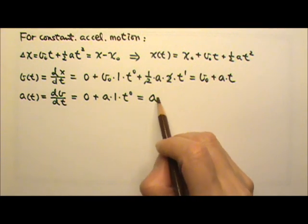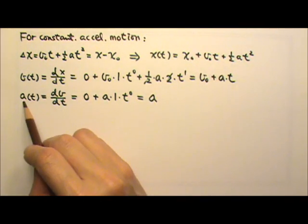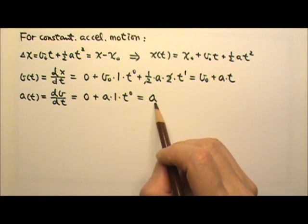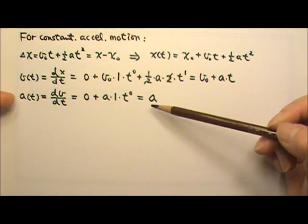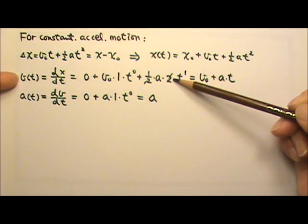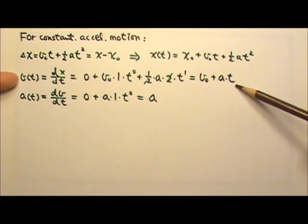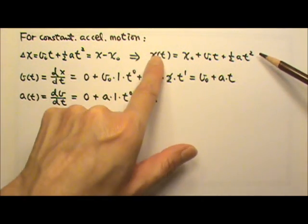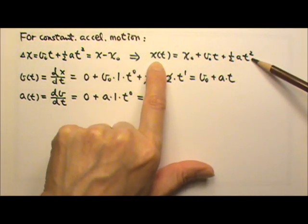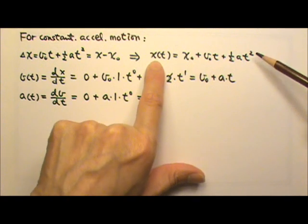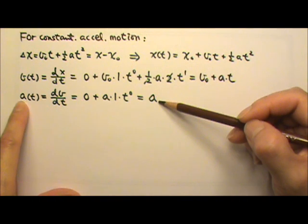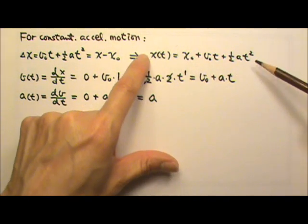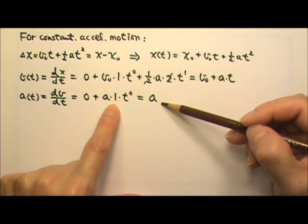When our acceleration is constant, that means acceleration is a zeroth-degree equation. Because taking a derivative loses one degree of power, the velocity is a first-degree equation, and the position as a function of time is a second-degree equation. So if position as a function of time is a second-degree equation, that means we have constant acceleration motion.